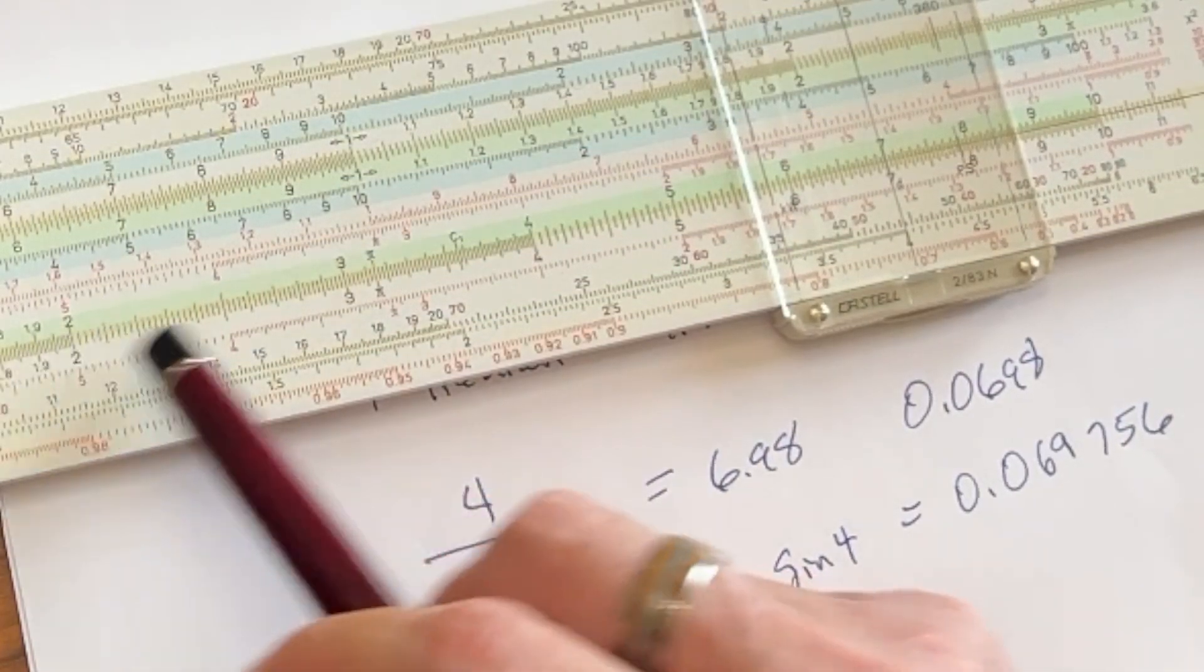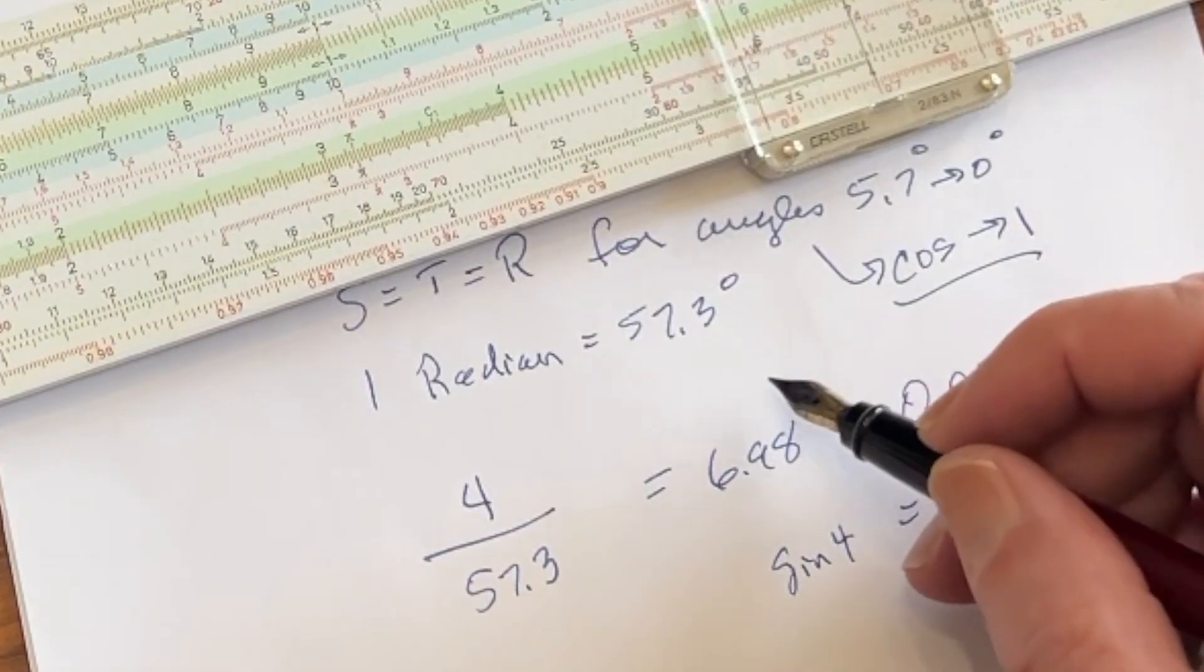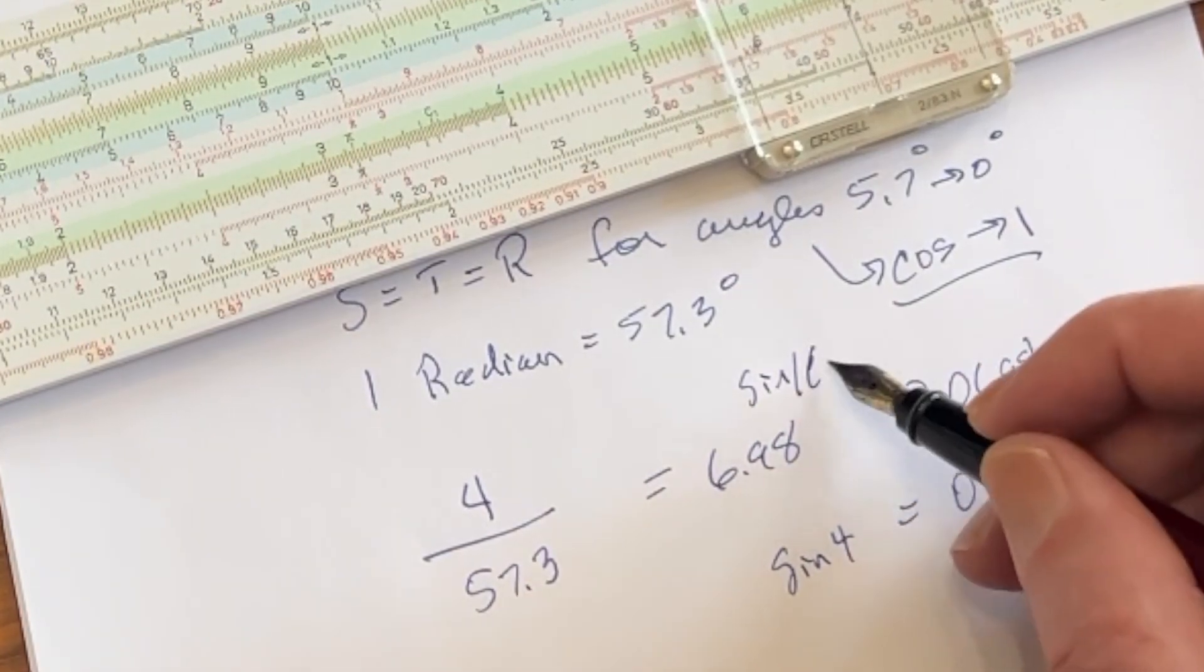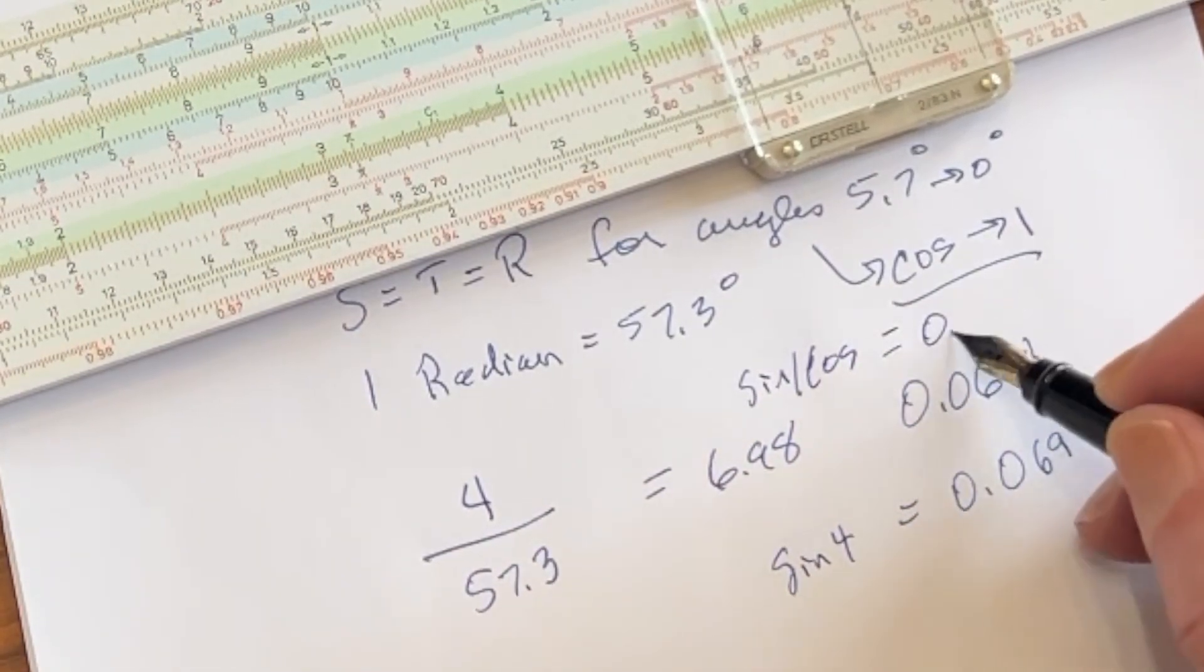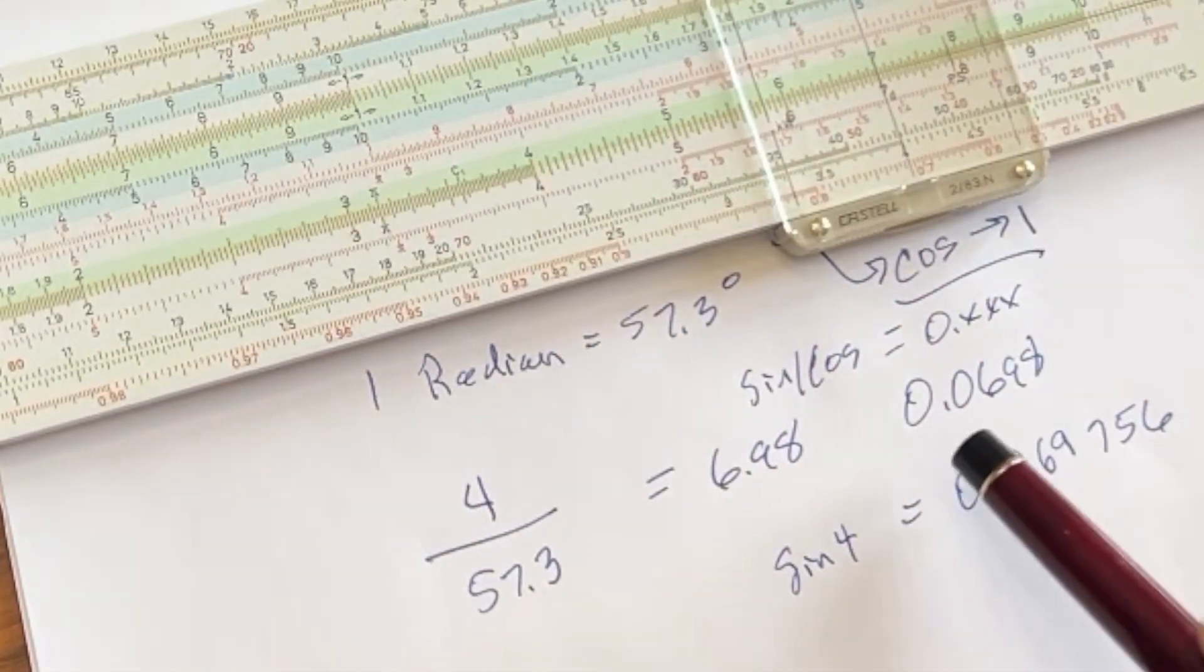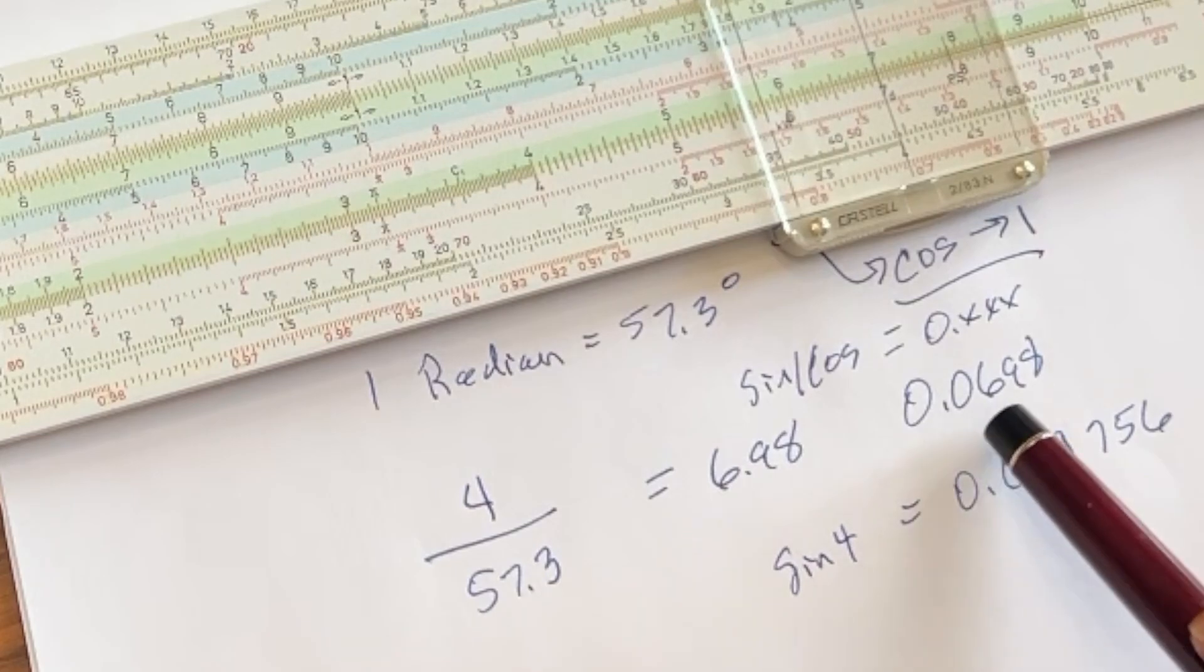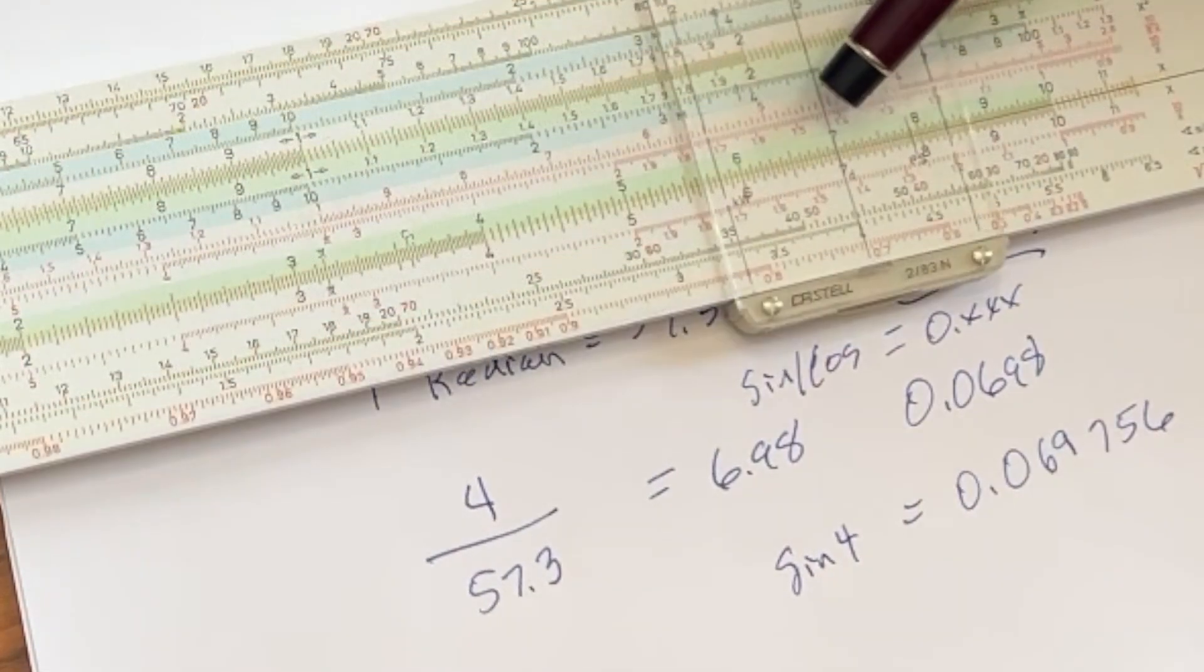And once again, if you're using the straight sine or the tangent scales, your form is going to be sine cosine equals 0.xxx. If you're using the ST scale, your sine and tangent is 0.0xxx. So you would read this out as just shy of 0.07.